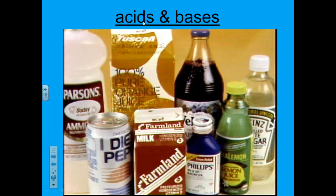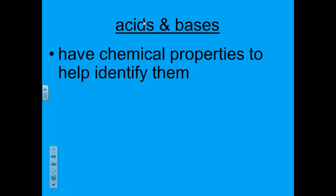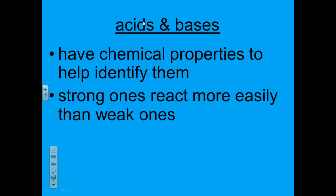Scientists use physical properties such as density to identify substances, and they can use chemical properties for this purpose as well. Acids and bases are two common types of substances. Lemon juice and vinegar are acids; household cleaners may contain bases. Strong acids or bases will react with other materials more easily than weak acids and bases do. Acids and bases have chemical properties that help people identify them — they react with chemicals in a special paper called universal indicator paper.